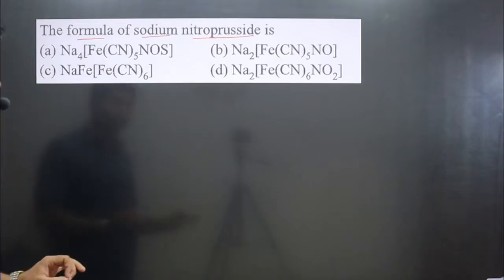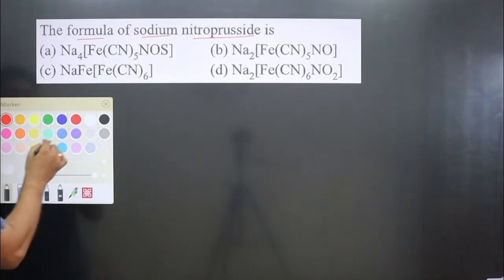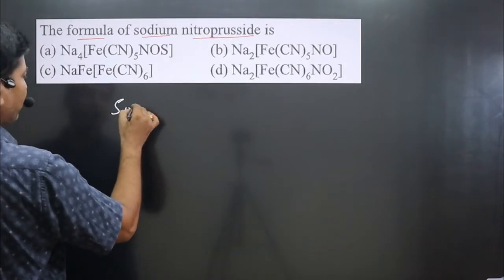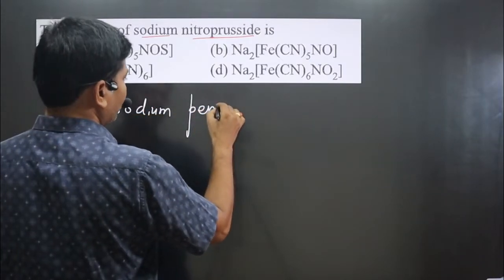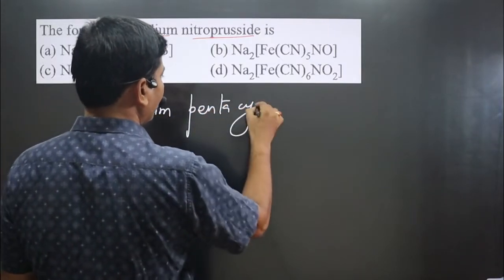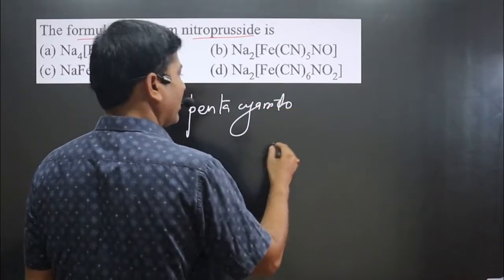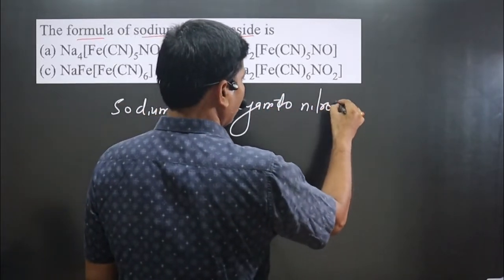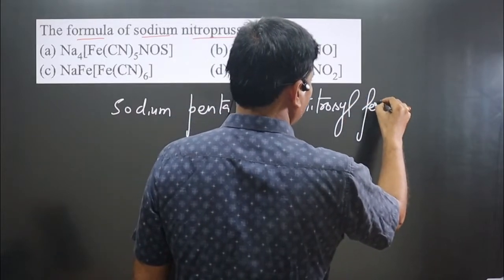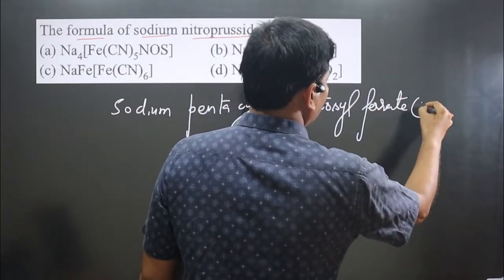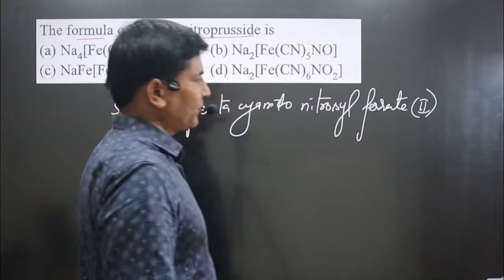Always keep in mind the IUPAC name of sodium nitroprusside is sodium pentacyanido, pentacyanido, pentacyanido nitrosyl, nitrosyl ferrate, ferrate, and ferrate(II). So that is the oxidation number of the central element.